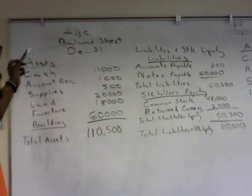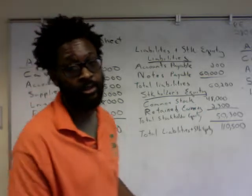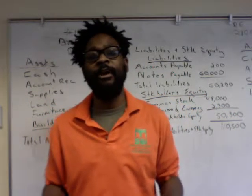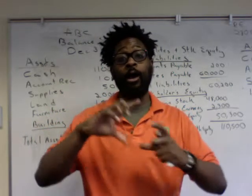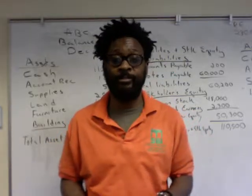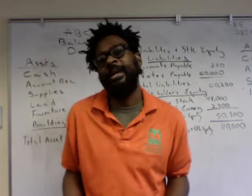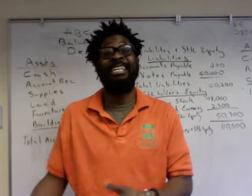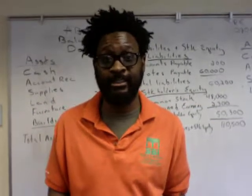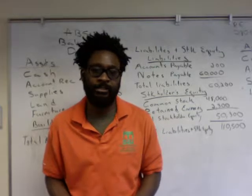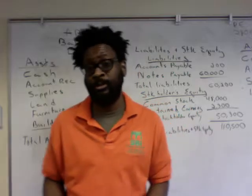The first thing you're going to do from the accounting equation is list your assets, and you list them in a particular order. We list all assets in order of liquidity. Liquidity is a term that summarizes how quickly you can convert something into cash. Assets we hold less than a year that convert into cash in less than a year are considered short-term assets. We always list short-term assets first, then long-term assets.